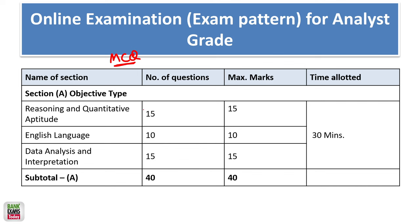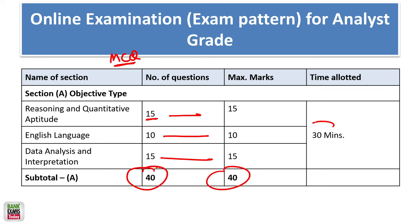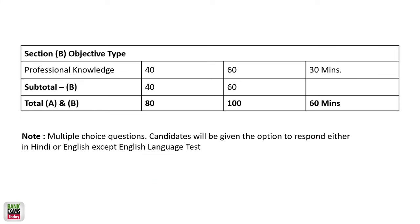In the objective section: Reasoning Ability and Quantitative Aptitude — 15 questions, 15 marks; English Language — 10 questions, 10 marks; Data Interpretation and Data Analysis — 15 questions, 15 marks. Total: 40 questions, 40 marks, with 30 minutes allotted. The Professional Knowledge section has 40 questions for 60 marks.